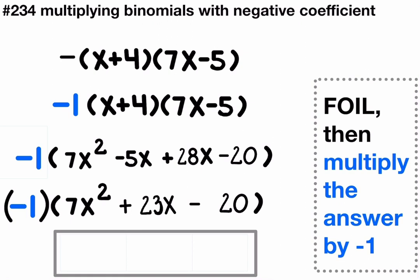Finally, we're ready to distribute the negative 1 through. So multiplying each term inside the parentheses by a negative changes the sign.